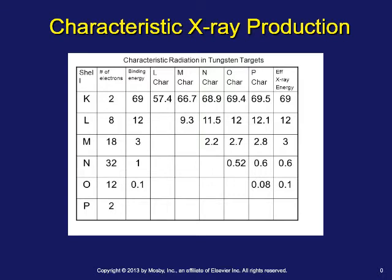For a tungsten target, the k-shell binding energy is 69 keV, so the x-ray produced from the loss of that electron is also 69 keV. There's a precipitous drop-off in energy from the k-shell to the l-shell at 12 keV. In terms of diagnostic uses, 69 keV is diagnostically useful but 12 keV is not, so we are only concerned with k-shell electron ejection for characteristic x-ray production as diagnostic x-rays. We filter the x-ray tube to keep those low energy x-rays from reaching the patient, because a 12 keV photon will only ionize the patient's skin with no diagnostic value.